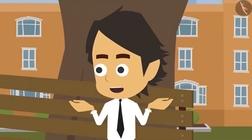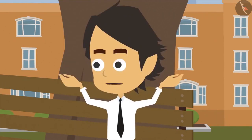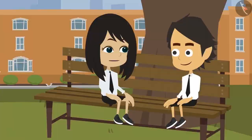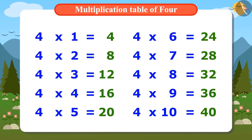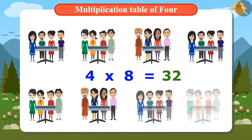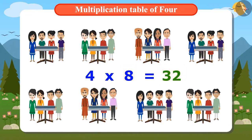But my problem hasn't been resolved. How many tables are needed for 32 guests? We already know it. Look, 32 comes in the multiplication table of 4 when we multiply 4 by 8. That means you need 8 tables. From this multiplication table, we can say that 8 tables can be used by 32 guests.